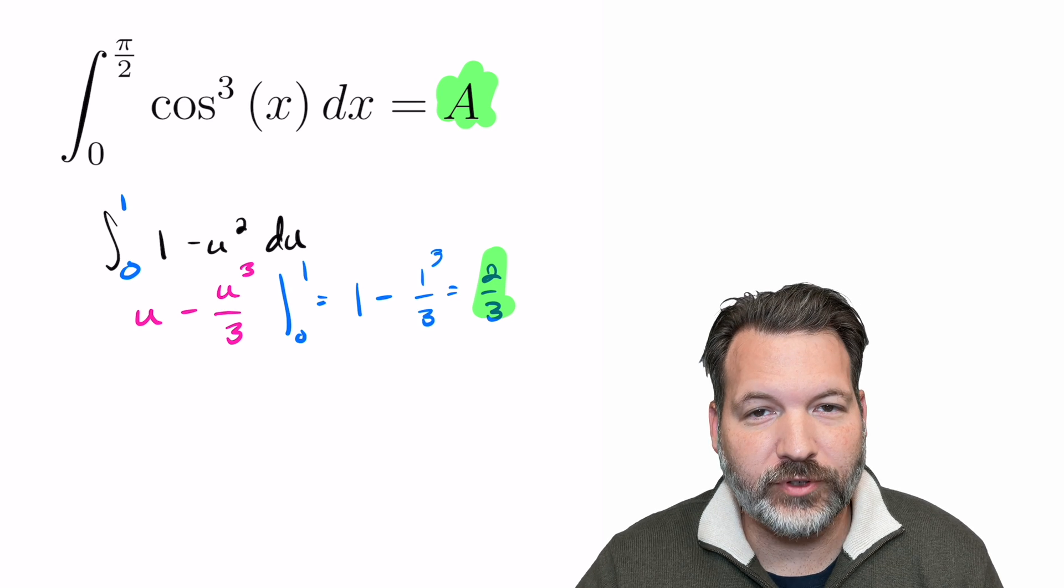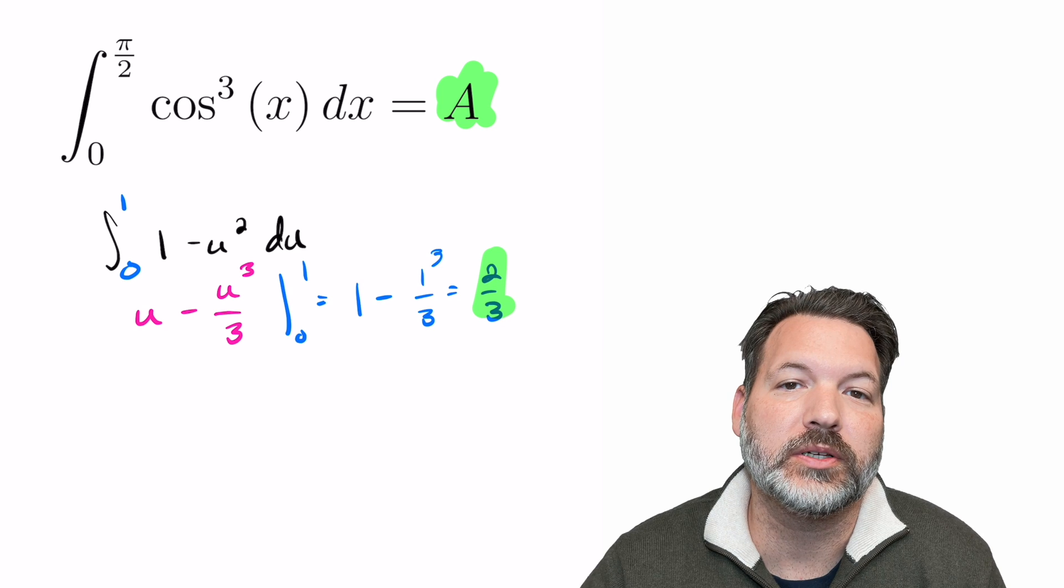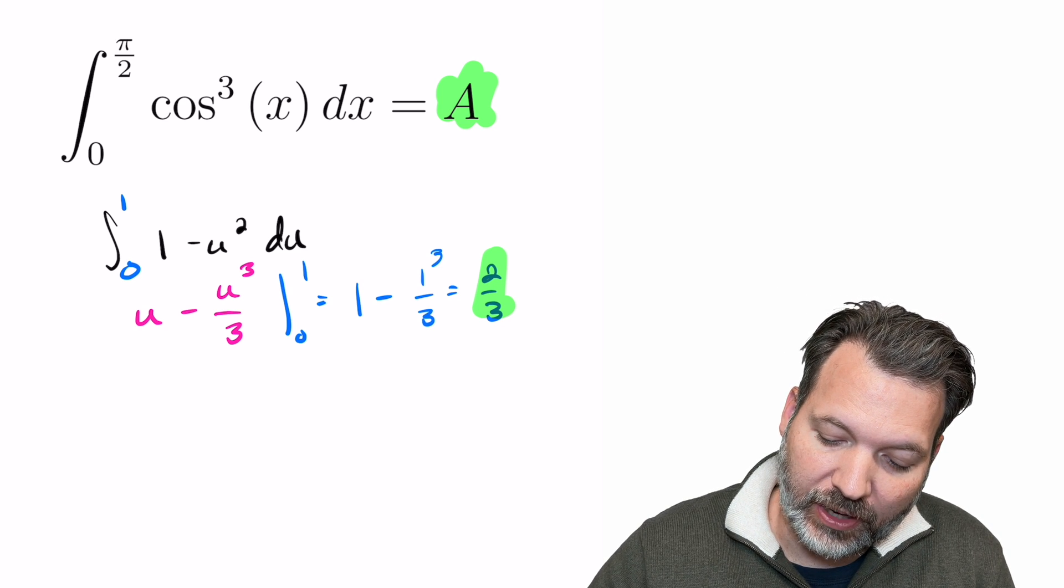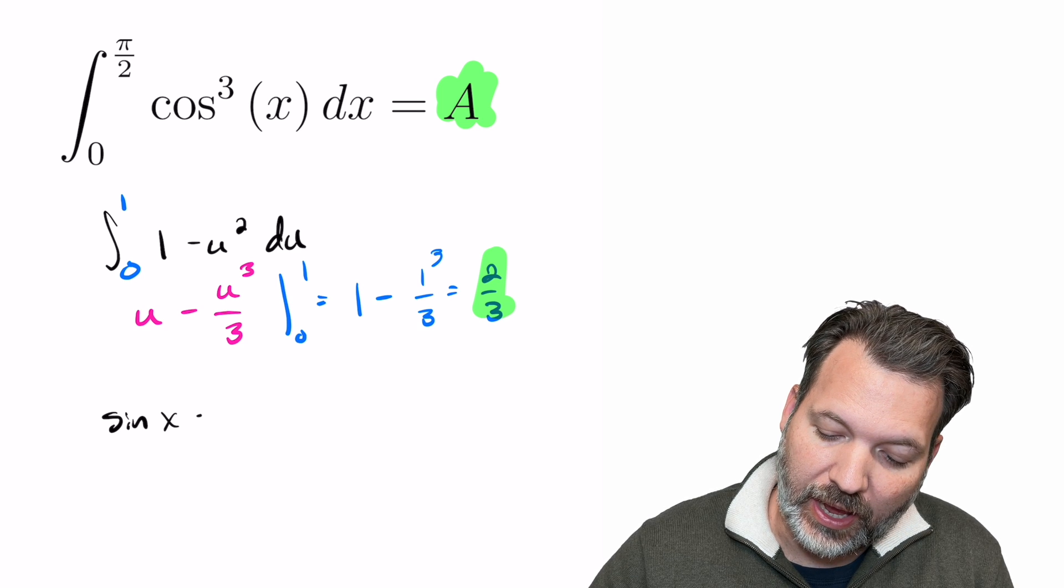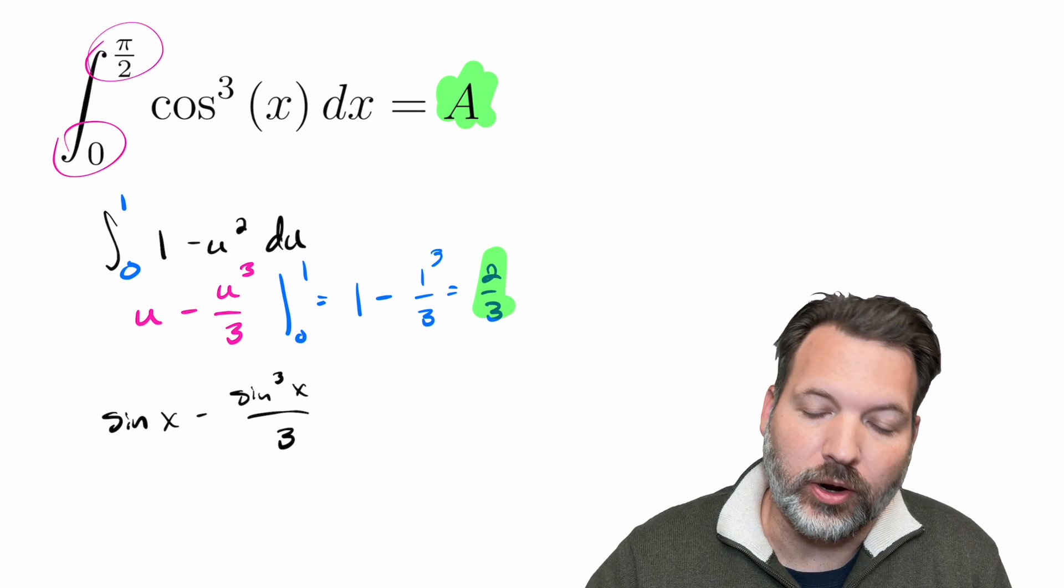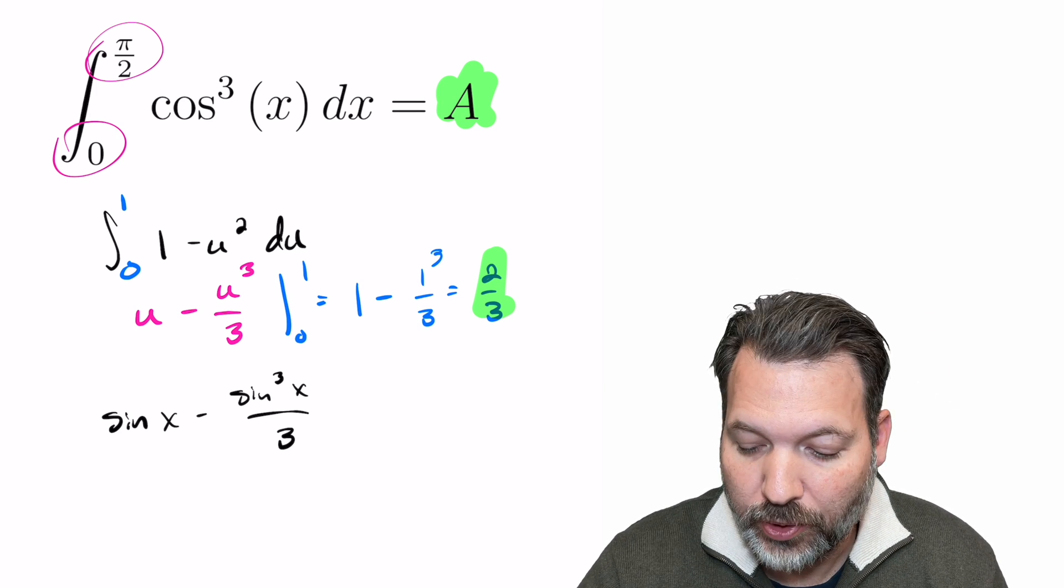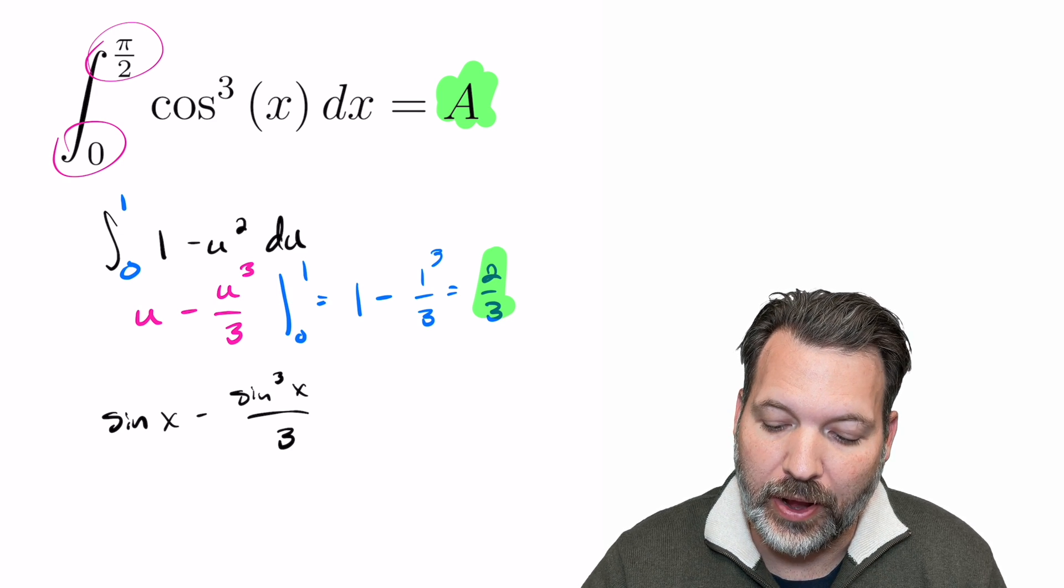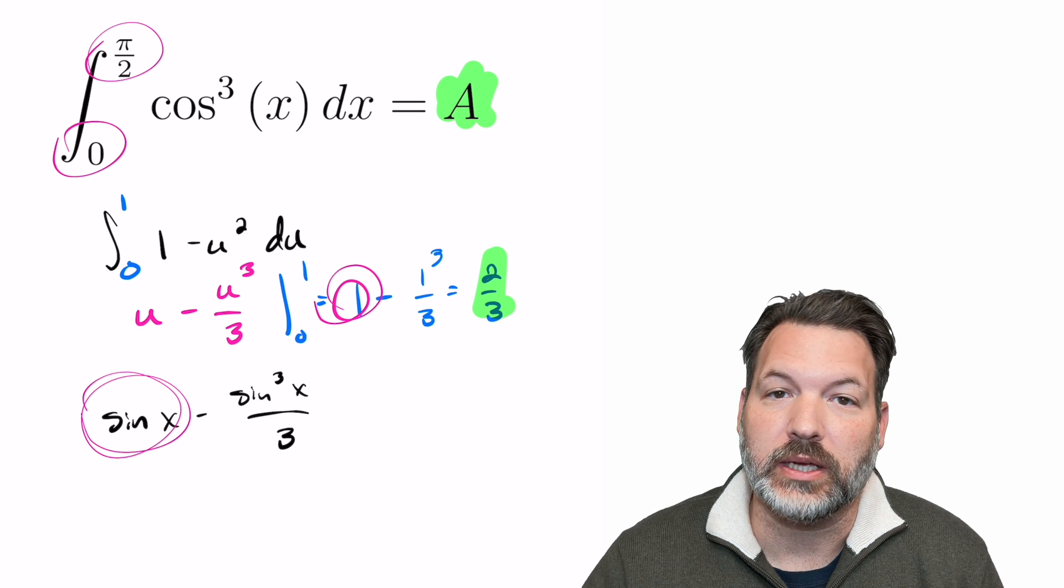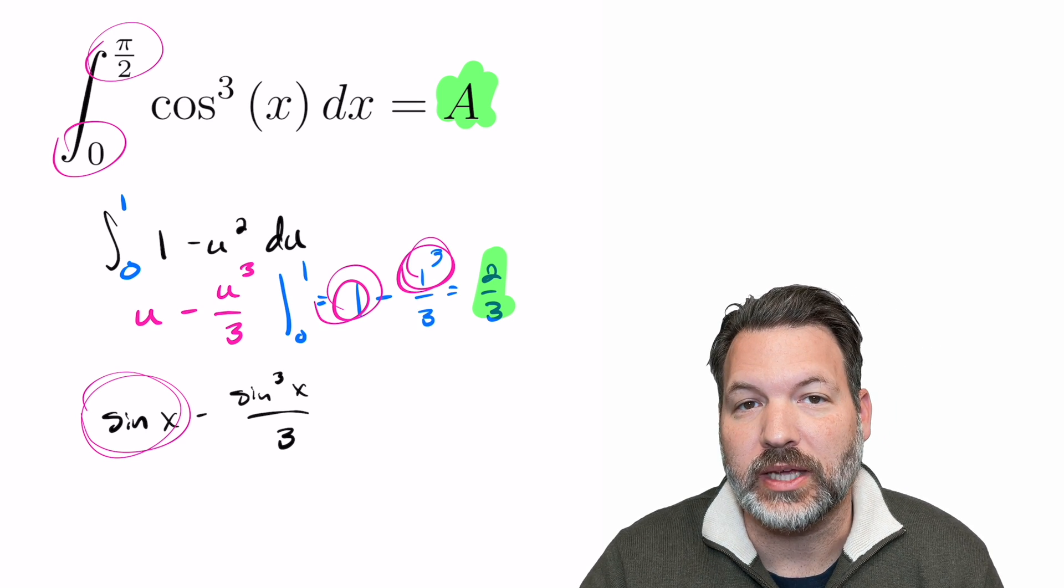To be clear, you don't have to change your bounds of integration. Another choice you have here is to kind of undo your substitution at the end of the process. So remember, we said u was sine of x. We could change this to sine x minus sine cubed x over 3, and then plug in our original upper and lower bounds, 0 and pi over 2. 0 still evaluates to 0 here, and this time plugging in pi over 2. Well, sine of pi over 2 is 1, and sine of pi over 2 cubed is 1 cubed. And so we still get the same 2 thirds.